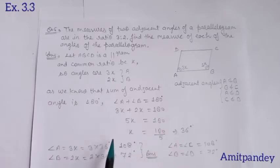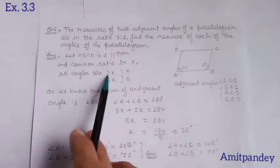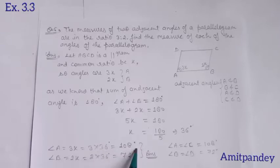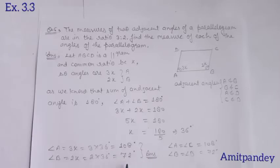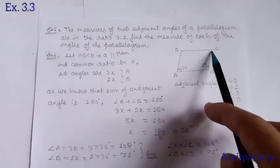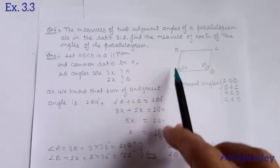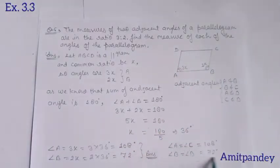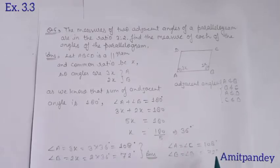Now we will find the measure of the angles by multiplying by x. Angle A equals 3x, so 3 into 36 equals 108°. Similarly, angle B equals 2x, which is 2 into 36 equals 72°. As you know, angle A equals angle C and angle B equals angle D — that is the opposite angles property of a parallelogram. So here are the measures of all four angles.